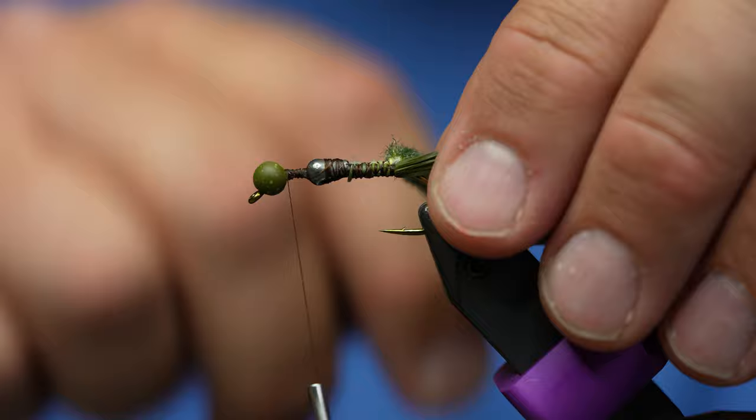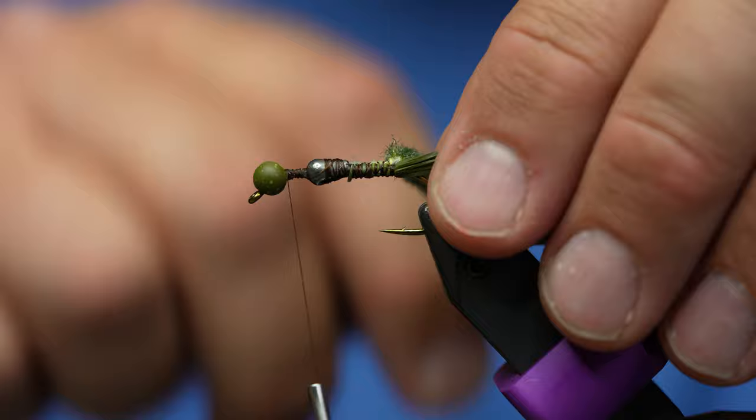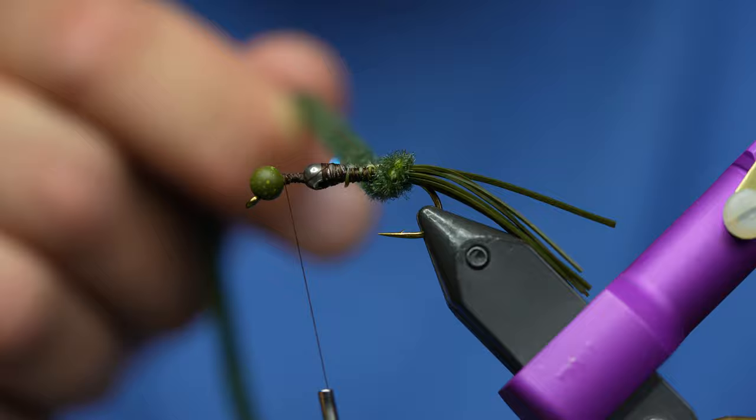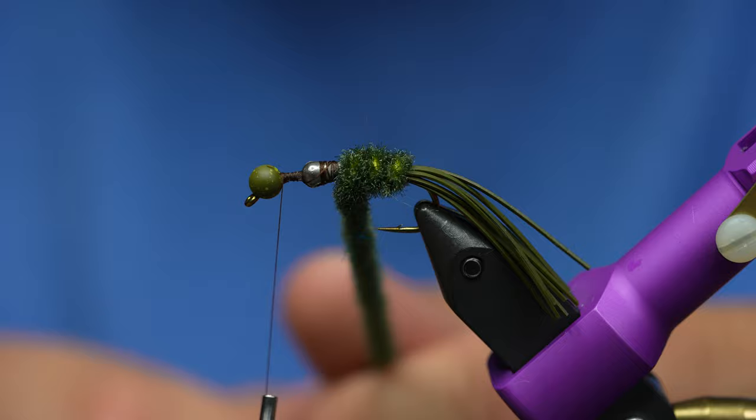For my first wrap, I'm just going to come around right at the very back of where I would normally tie in that tail. If I tie it in like that, it calms those legs down and they just kind of lay flat. I think you guys are catching on to what this is - it's basically a tube jig.